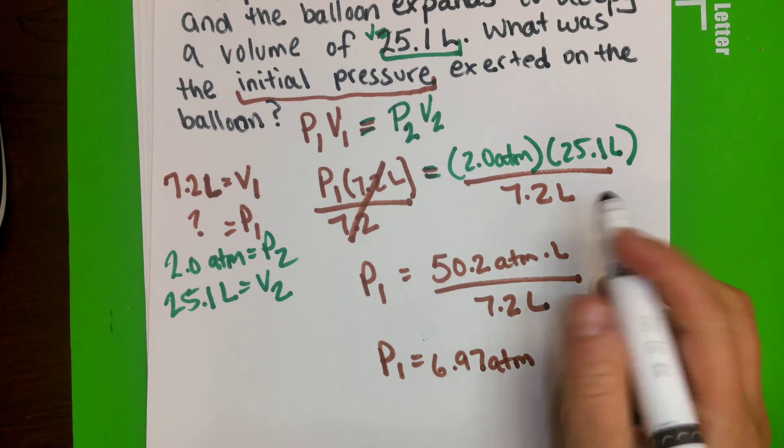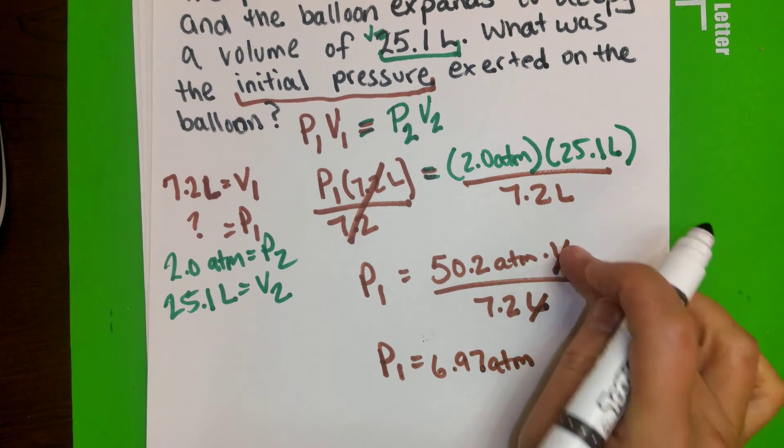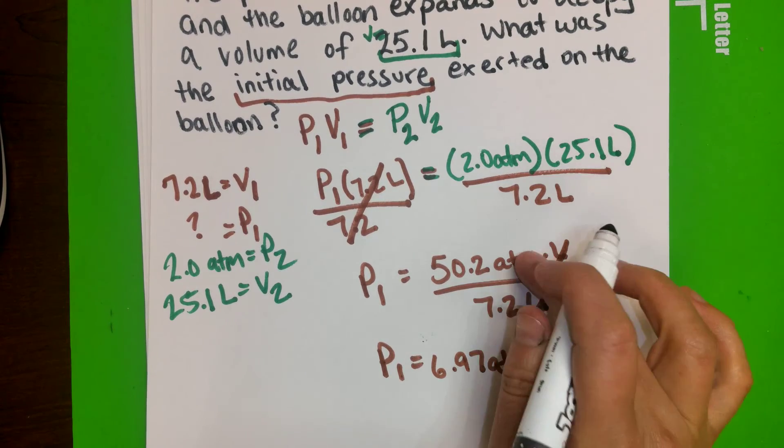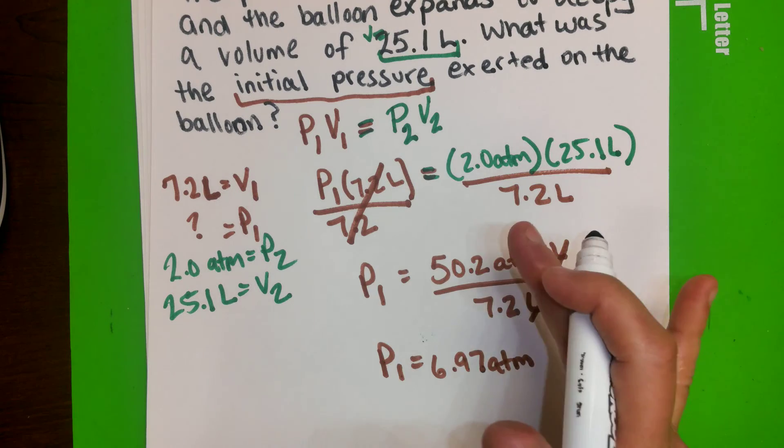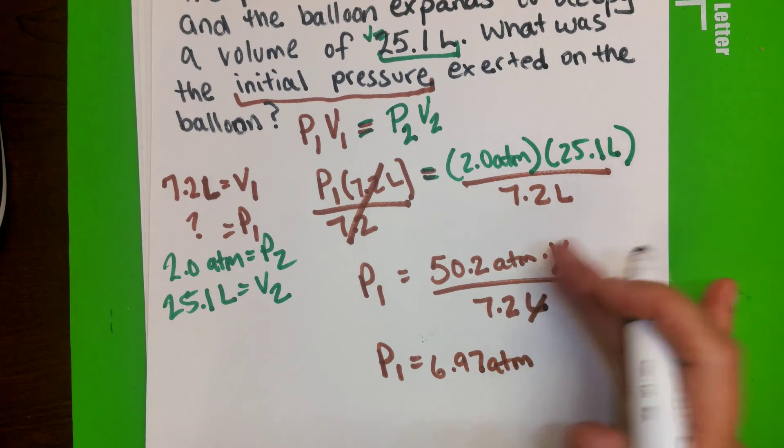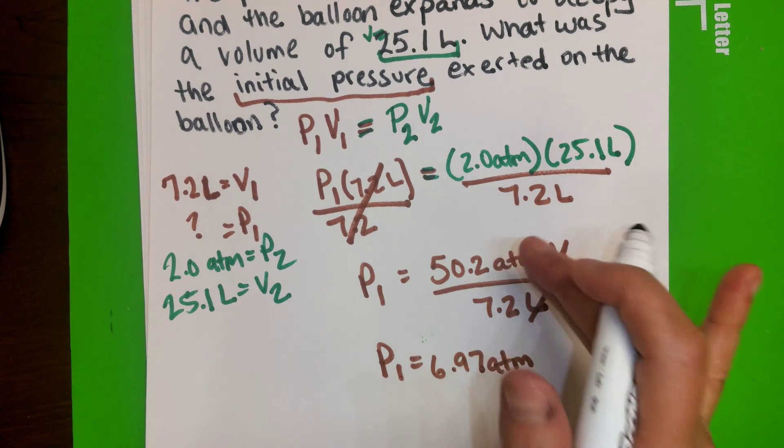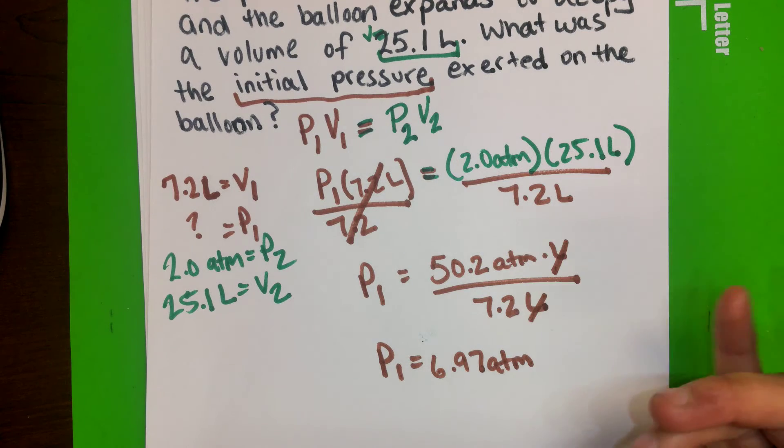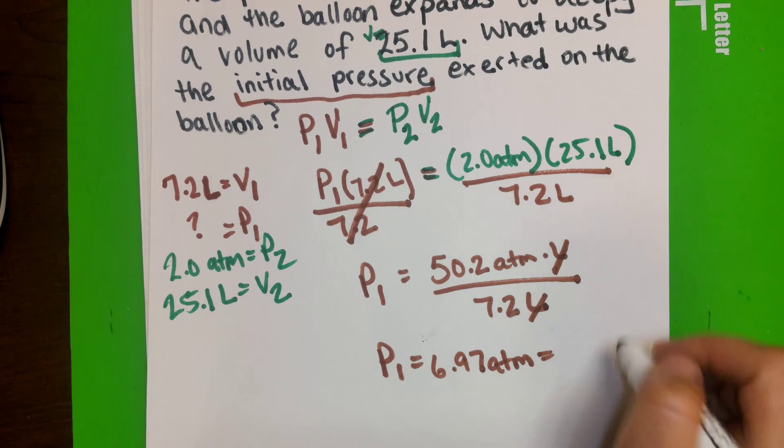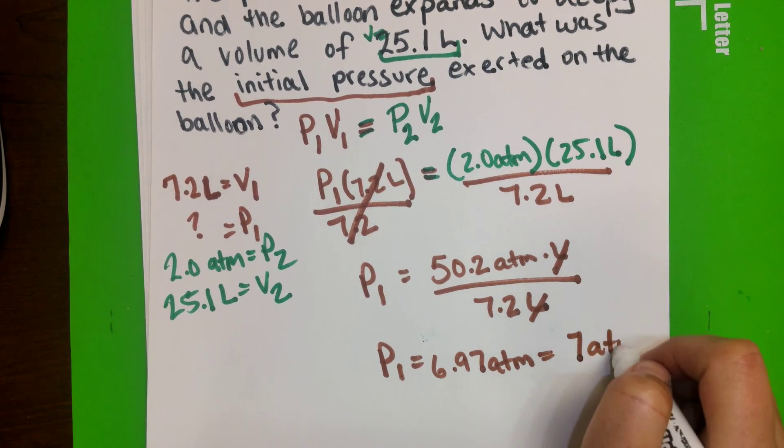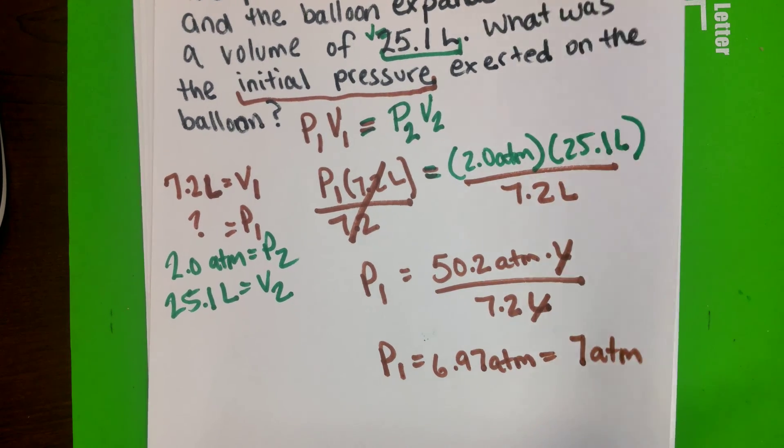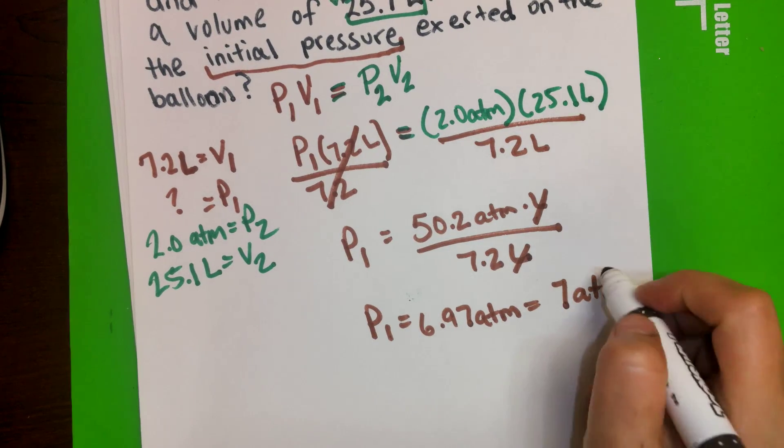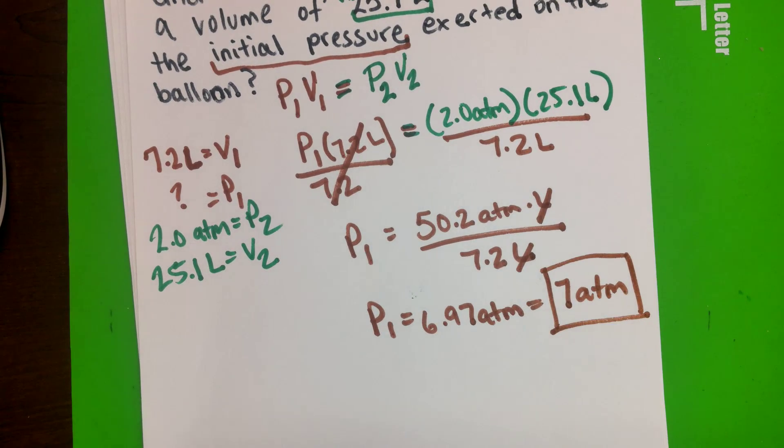Now, why just ATM? Because liters are really liters. They cancel each other out, and you're just left with ATM. Anyways, we're solving for pressure, so liters shouldn't be there. It should be just atmospheric pressure. And if we round it, it will be 7 ATM. So just make sure your setup is correct in Schoology, and this is your answer.